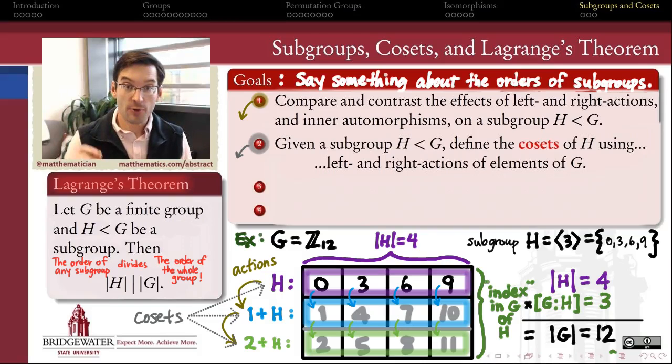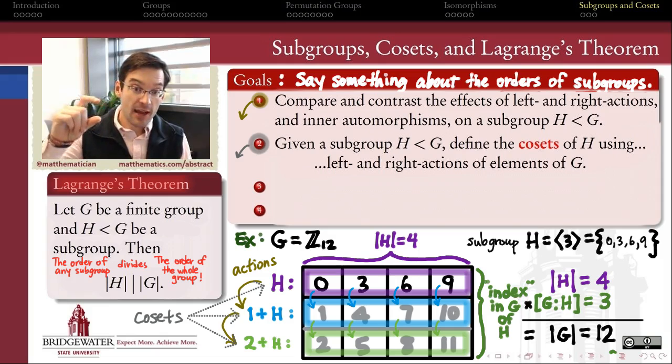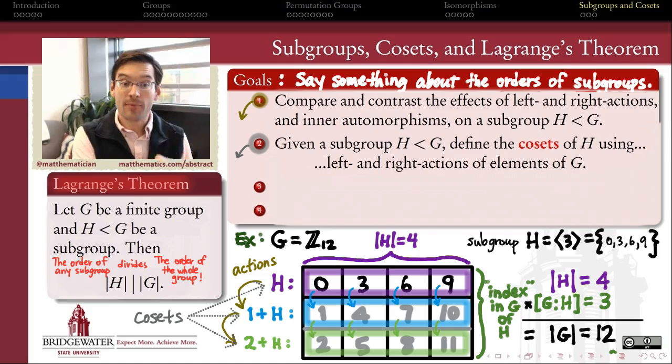So now we know that left and right cosets of a subgroup inside of a group are just ways of taking that subgroup and moving it around to different places within its parent group by either acting on the left by other elements or acting on the right by other elements.